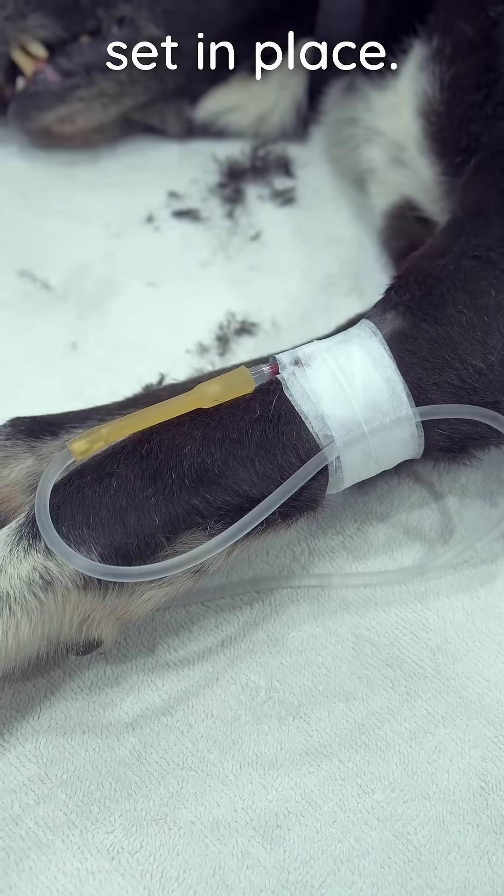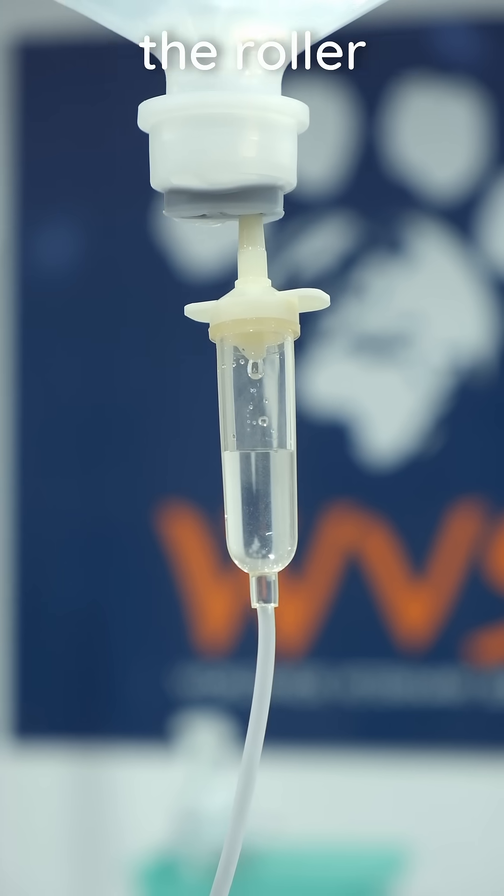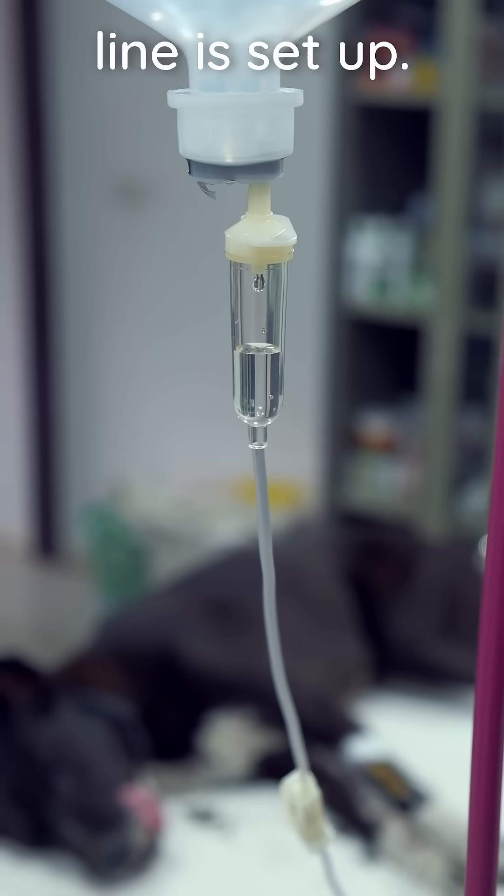Use tape to secure the set in place, then slowly open the roller clamp to ensure fluid flows into the vein. Finally, adjust the roller clamp to the calculated drip rate and your line is set up.